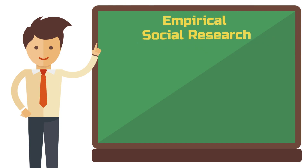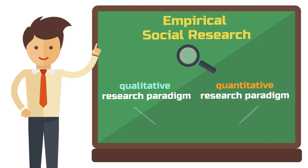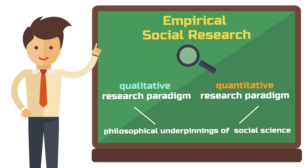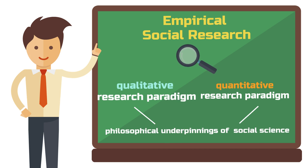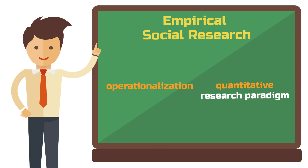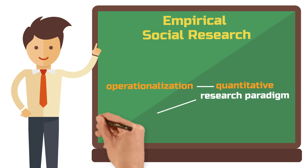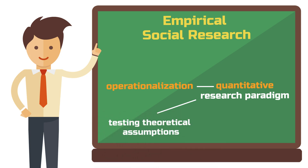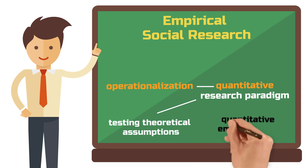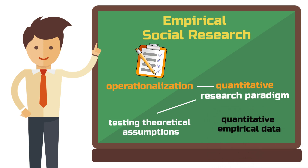In the realm of empirical social research we typically distinguish between the qualitative and quantitative research paradigm. This division finds its origins in the philosophical underpinnings of social science, which I've explored in depth in my other tutorial on ontology, epistemology and methodology. Operationalization is an important task within the realm of quantitative social research. The quantitative paradigm is characterized by its goal of testing theoretical assumptions, mostly through the use of statistical methods. The bedrock of these statistical methods is grounded in quantitative empirical data, such as survey responses, the outcomes of experiments, or sometimes digital trace data.